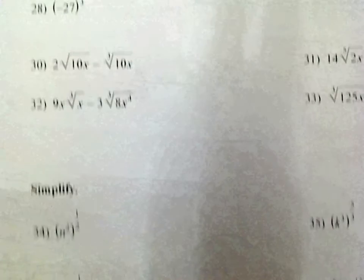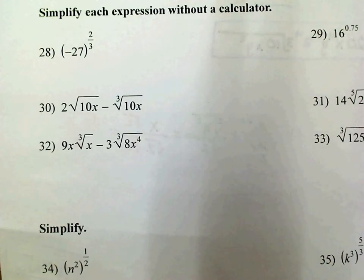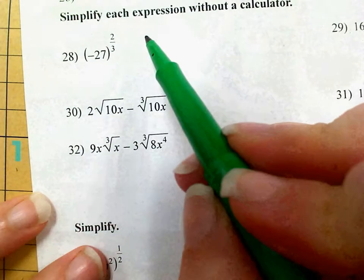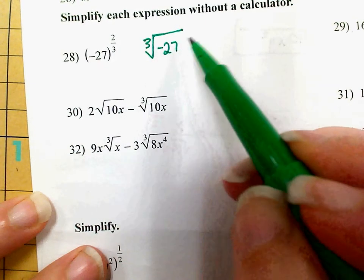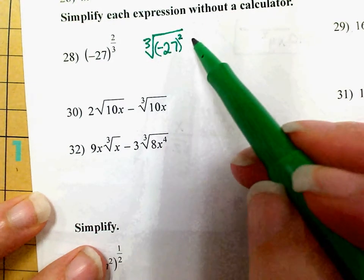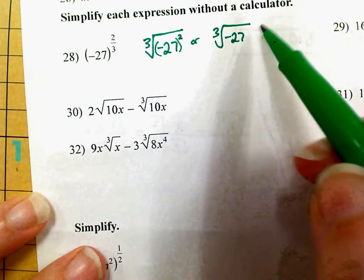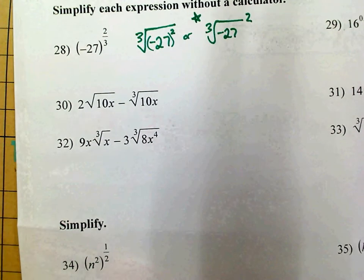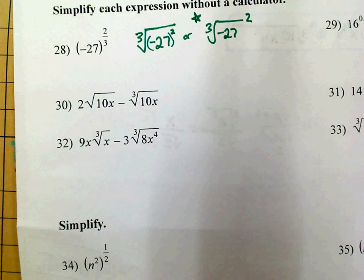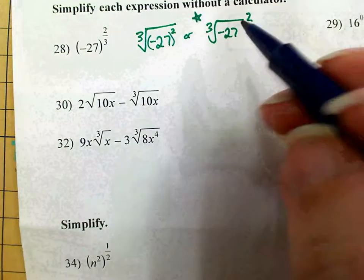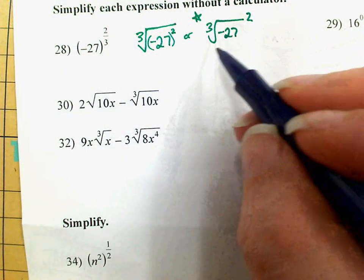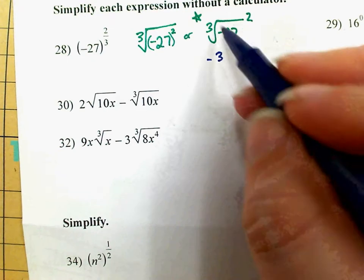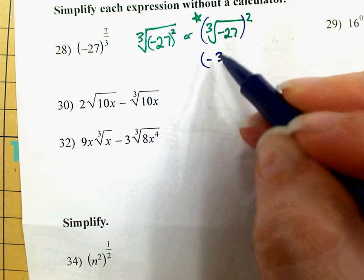On 28, negative 27 to the 2 thirds power. That means I'm taking the cubed root of negative 27. You can either say negative 27 squared, or you can say the cubed root of negative 27 and then square your answer. I personally prefer the second one because I want to make the number smaller instead of larger first. The cubed root of negative 27 is negative 3 — since 27 is 3 cubed and the cubed root of a negative is a negative — and then squaring that makes it positive 9.